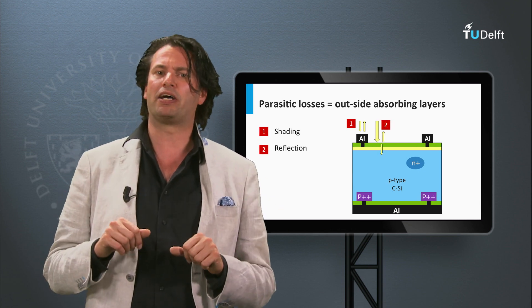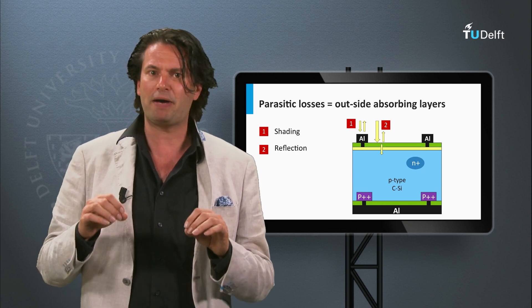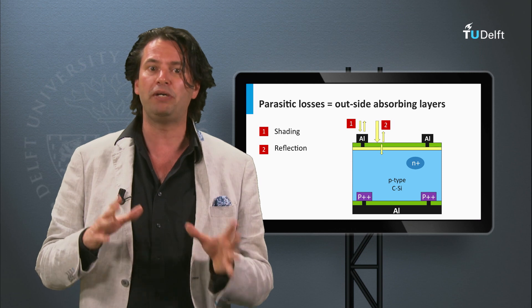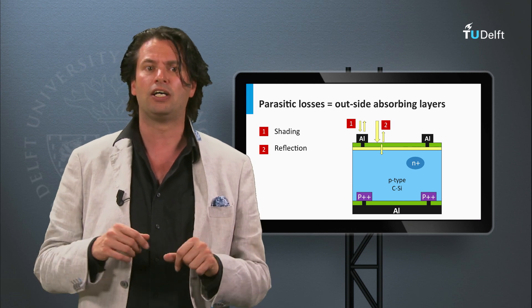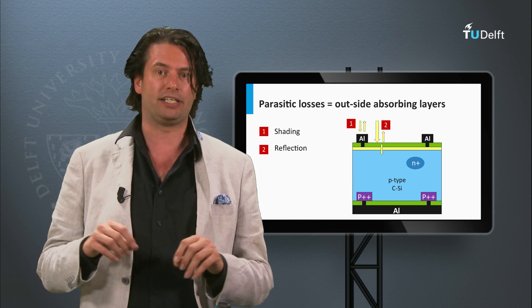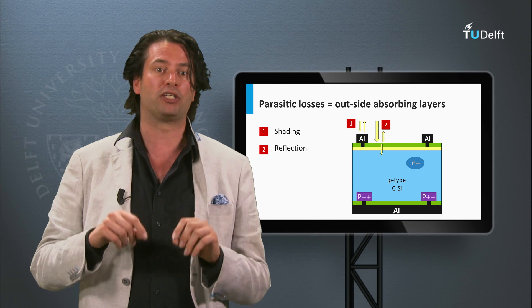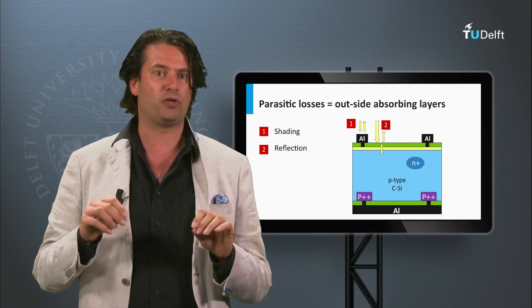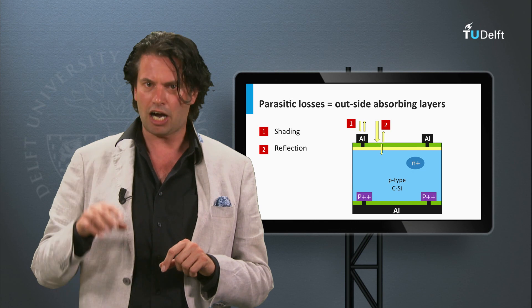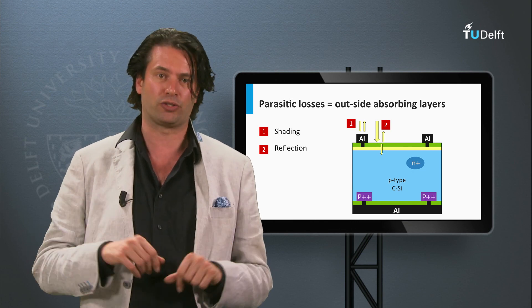The second optical loss mechanism is the reflection at the front interface of the solar cell. The light passing through an interface between two media with different refractive indices will always be partly reflected and partly transmitted at the interface. As all types of solar cells suffer from this loss mechanism, I would like to spend some time on this in the next block. I will discuss some concepts which are being used as anti-reflection coatings.